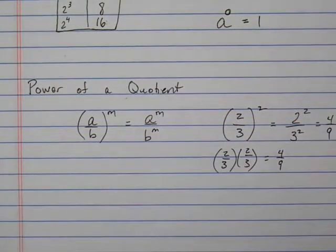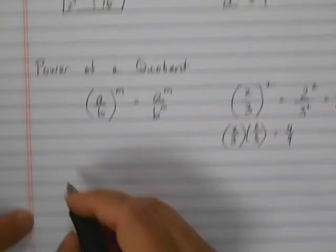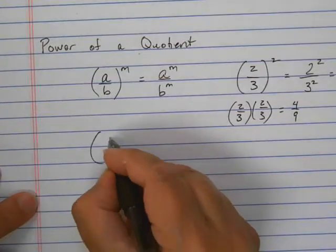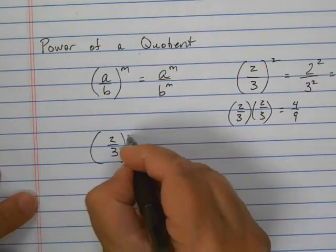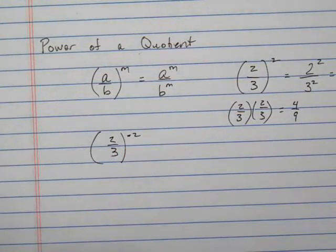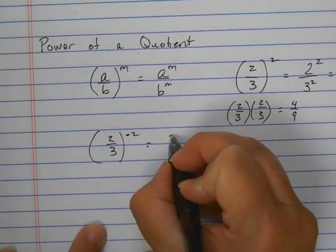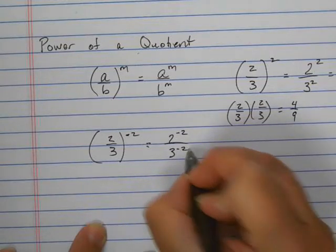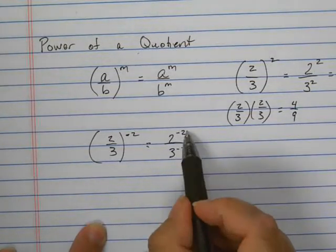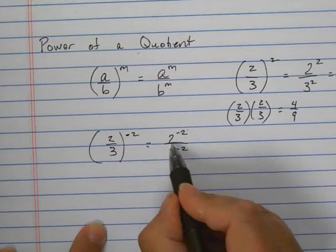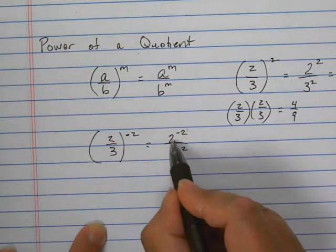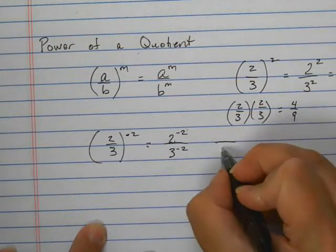But what happens if you have something like 2 thirds to the negative 2 power? So this would be 2 to the negative 2 over 3 to the negative 2. And we know that any time you have a negative exponent, that will take this base number to the denominator.